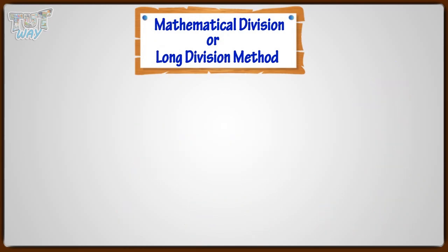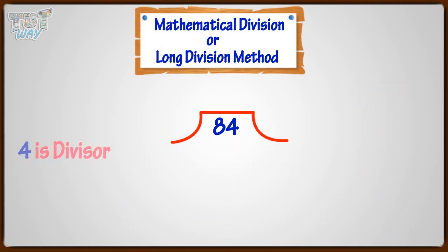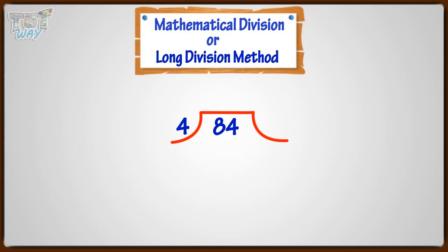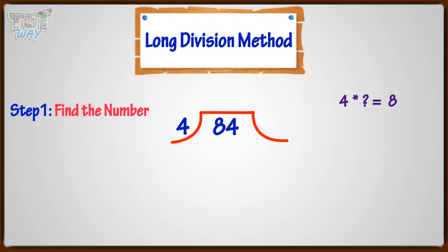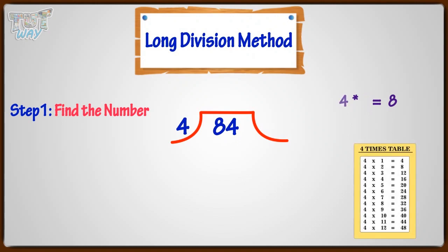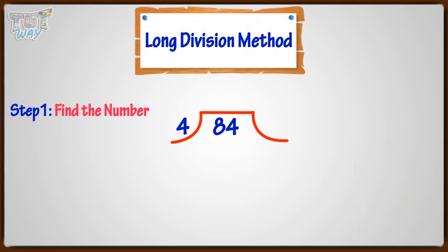First of all, write like this. Here, 4 is our divisor and 84 is our dividend. Now, the first step in long division method is: find the number — that is, find how many times the divisor can go into the first digit of the dividend. Think this way: 4 multiplied by what gives us something equal or less than 8? 4 multiplied by 2 gives us 8. So, 2 is the number we want. Write it in the quotient.